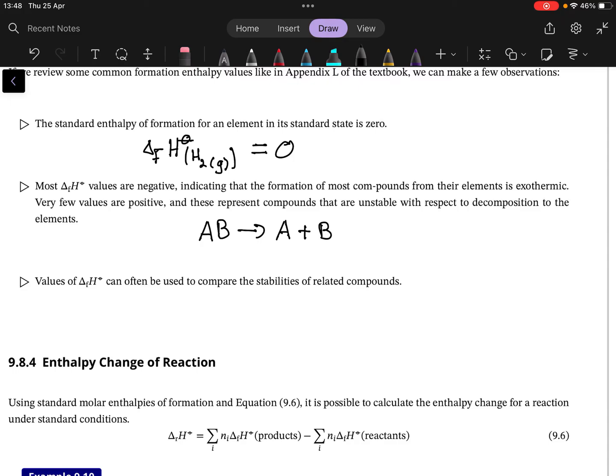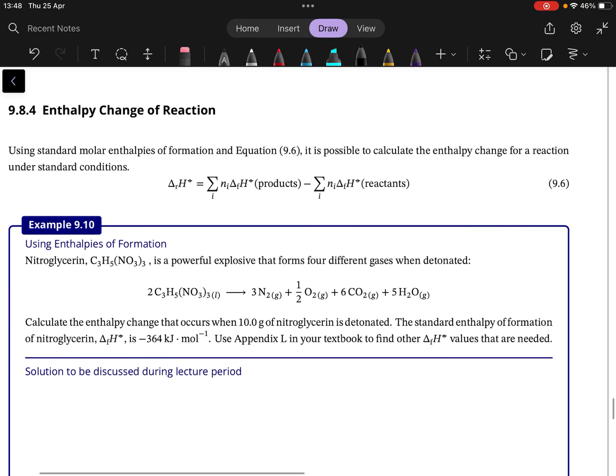And of course, if we can determine stabilities, we can use the formation enthalpies to compare the relative stability of compounds. So if something is much more negative than something else, the thing that is much more negative will be more stable.